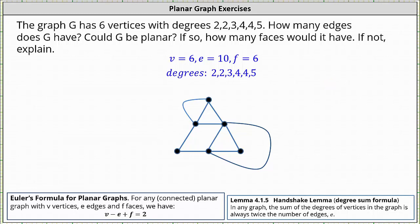We can easily see we have six vertices. Let's count the edges. We have 1, 2, 3, 4, 5, 6, 7, 8, 9, and 10 edges. So far, so good.